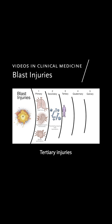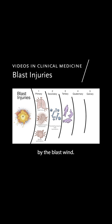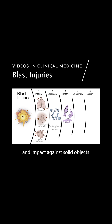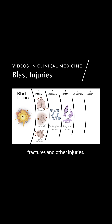Tertiary injuries occur when individuals are displaced by the blast wind. The acceleration of the body and impact against solid objects result in blunt trauma, which can lead to bone fractures and other injuries.